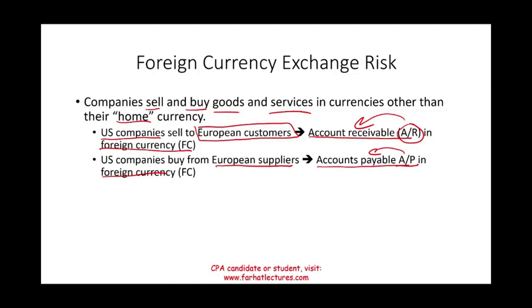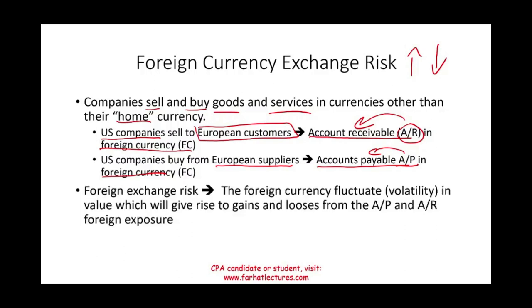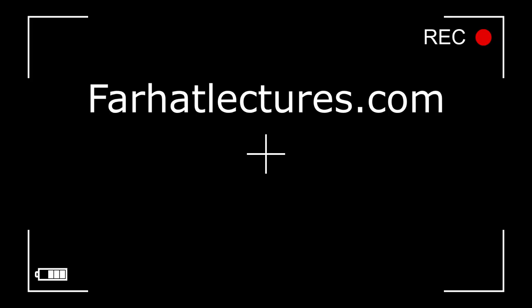The foreign currency could go up or down in value — it fluctuates — and this volatility gives rise to either gains or losses from the AP and the AR. Companies need to find a way to reduce, minimize, or even eliminate that risk. First, we'll look at what factors influence exchange risk.